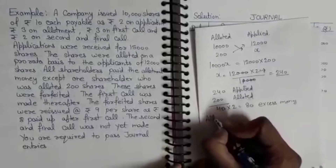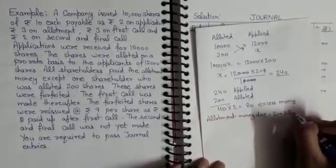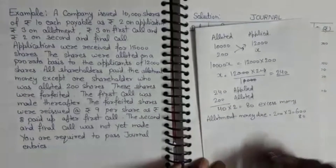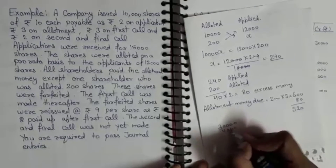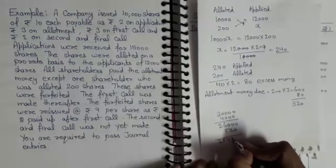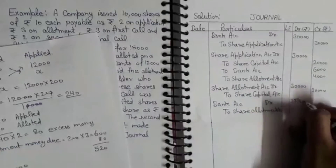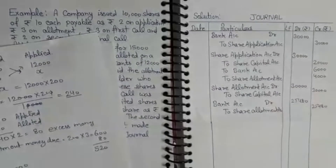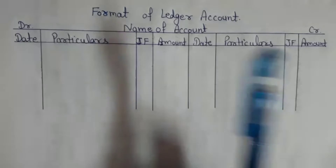Allotment money इस shareholder की कितनी due हुई? 200 shares × ₹3 = ₹600 due। उसमें से ₹80 excess money already adjust है, तो ₹600 - ₹80 = ₹520 उसको देना होगा। बाकी shareholders से मिलने वाली allotment ₹25,480 होगी — यह वो amount है जो allotment पे receive होगी।